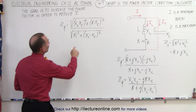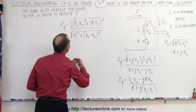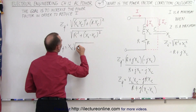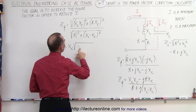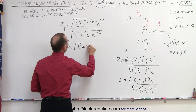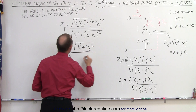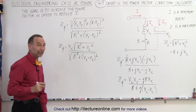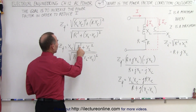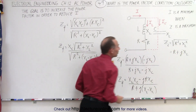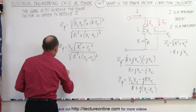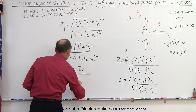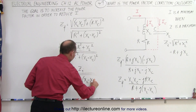Notice that there is an X_C squared in both terms in the numerator, so X_C can be factored out of the radical. This gives us Z_final equals X_C times the square root of (R squared plus X_L squared), all divided by the square root of R squared plus (X_L minus X_C) squared. The quantity under the radical in the numerator is actually the initial impedance before we added the capacitor, so Z_final equals X_C times Z_initial divided by the square root of R squared plus (X_L minus X_C) squared.